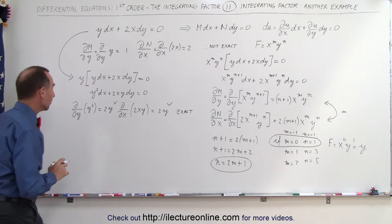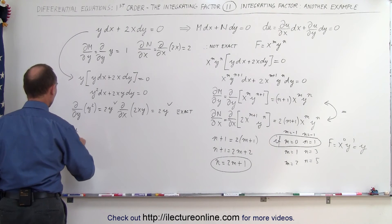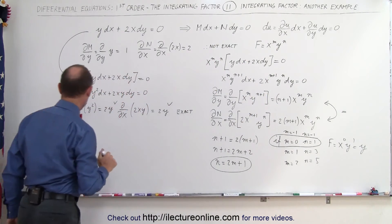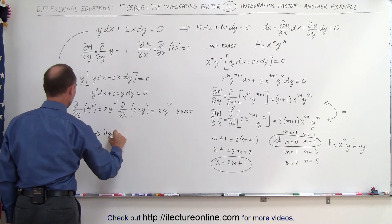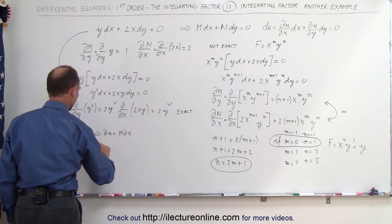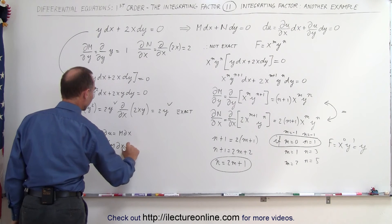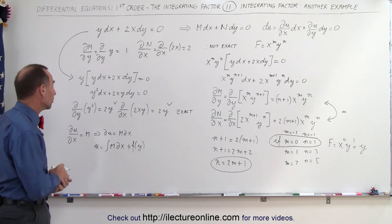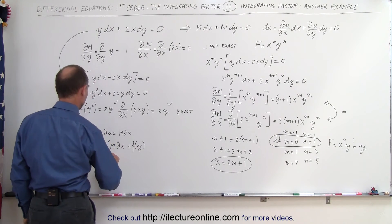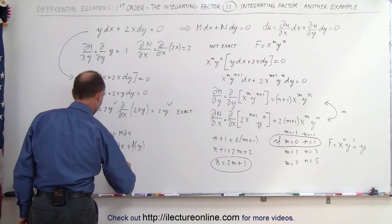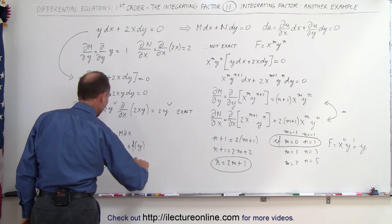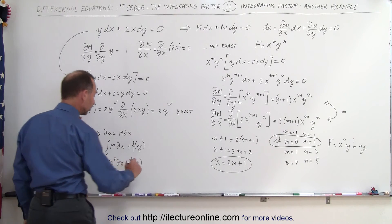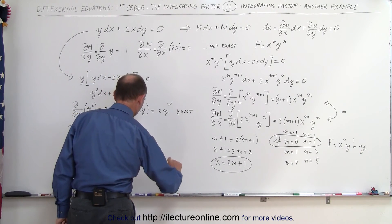We find the solution by using the fact that the partial of u with respect to x equals M. Therefore u equals the integral of M dx plus a function of y, since y is treated as a constant and the constant of integration can be a function of y. Here M is y², so u equals the integral of y² dx, giving u = xy² plus some function of y.